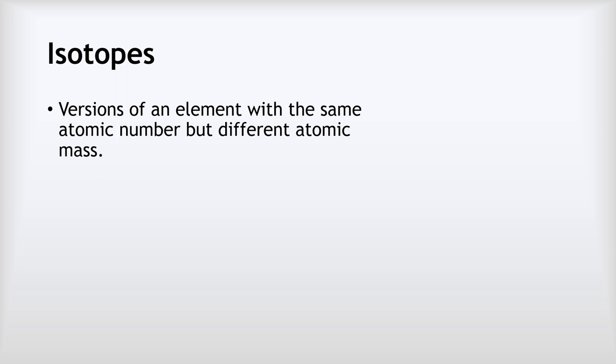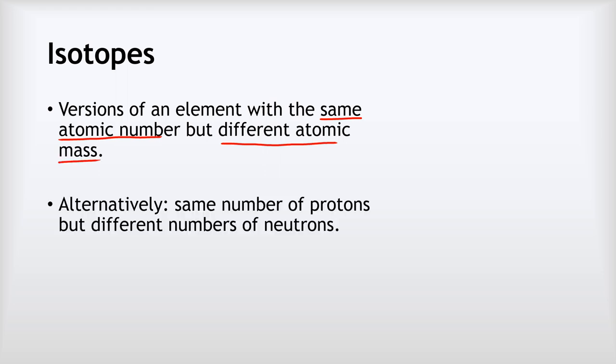So what are isotopes? Isotopes are versions of an element with the same atomic number, but a different atomic mass. Another way of putting that is to say that they are versions of an element with the same number of protons, but with a different number of neutrons.